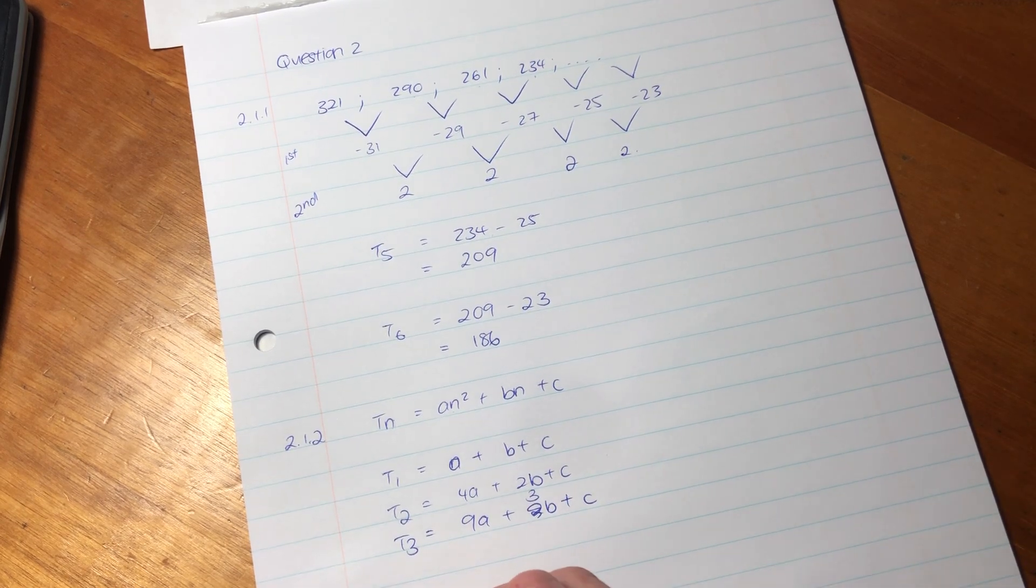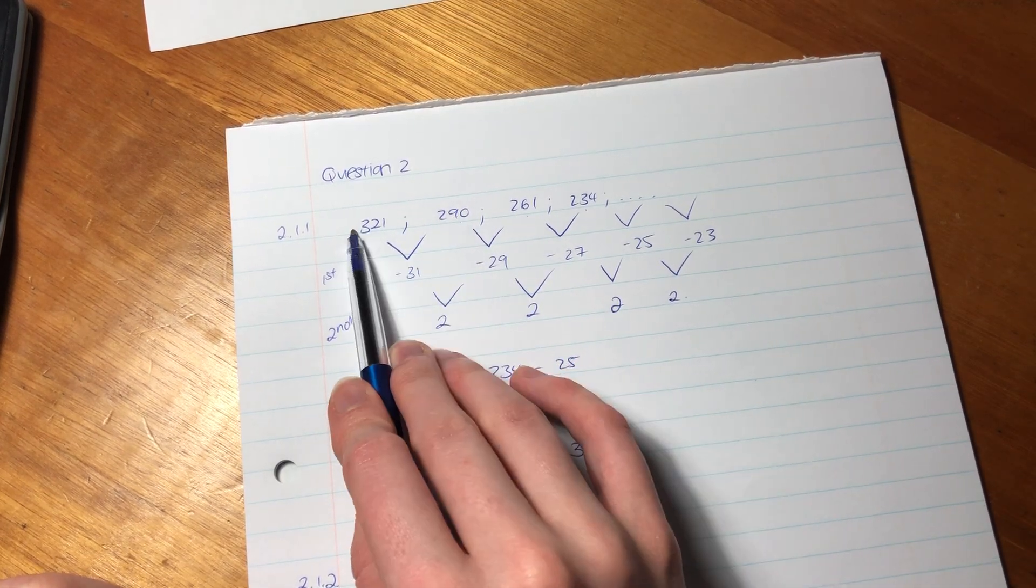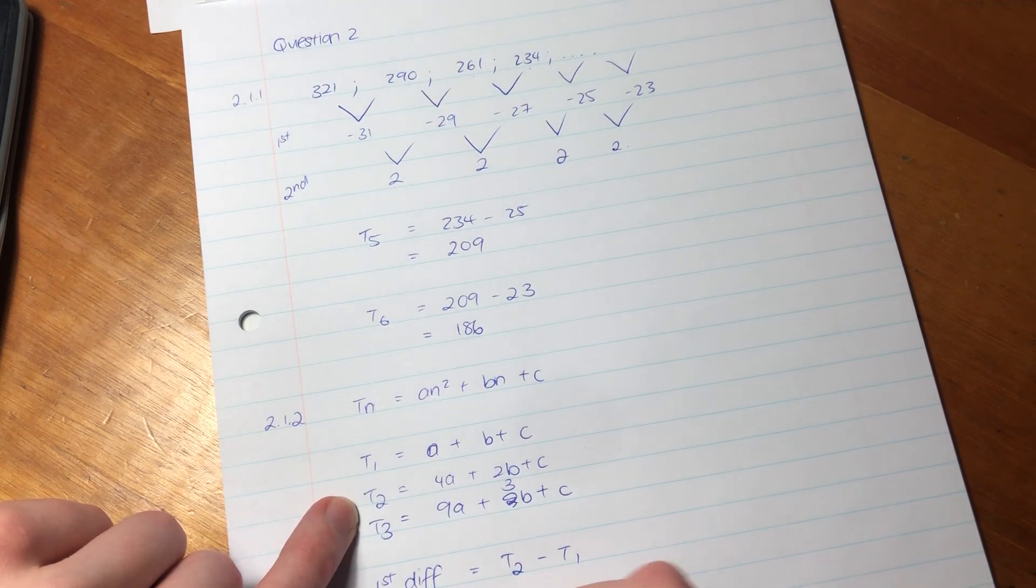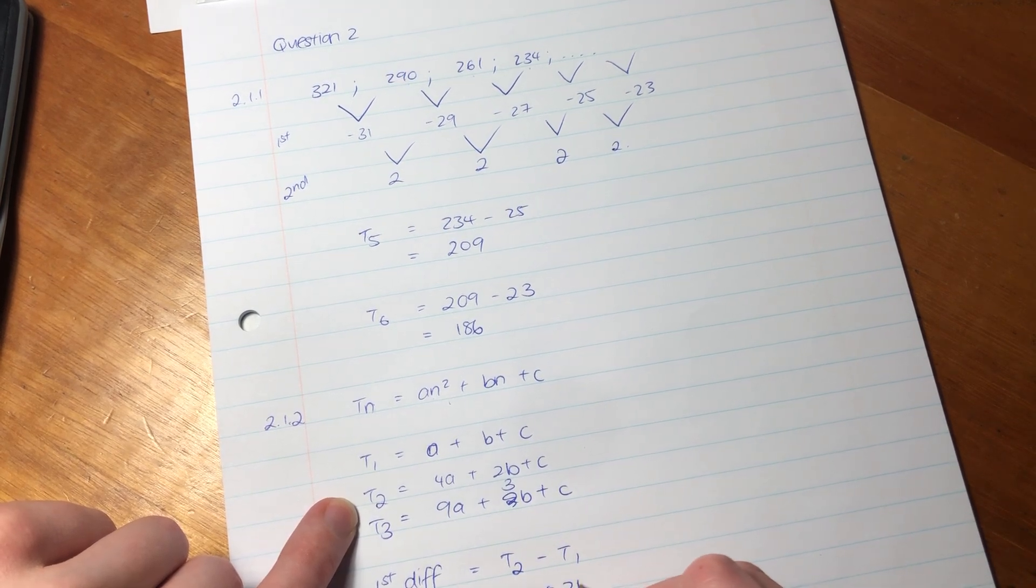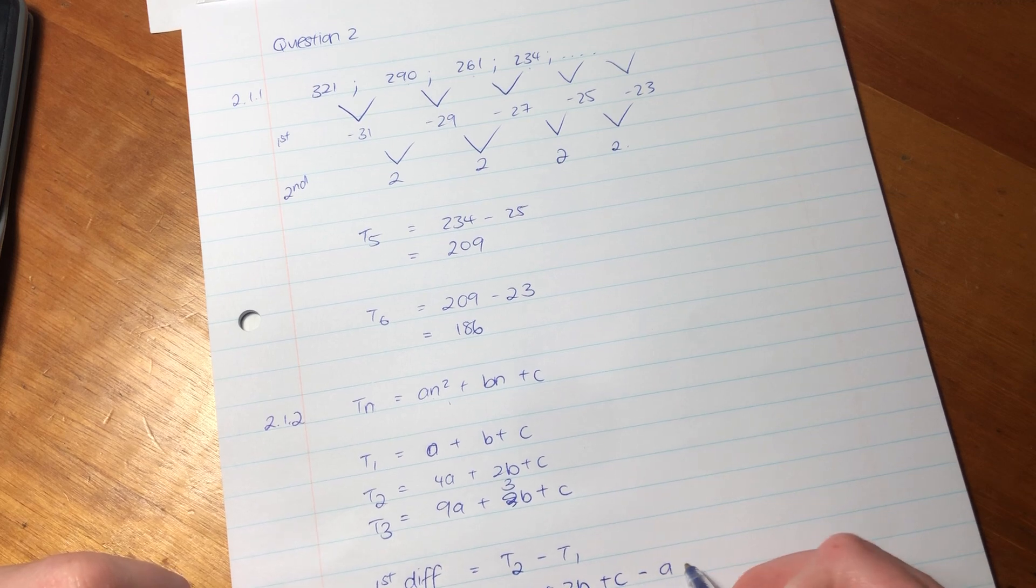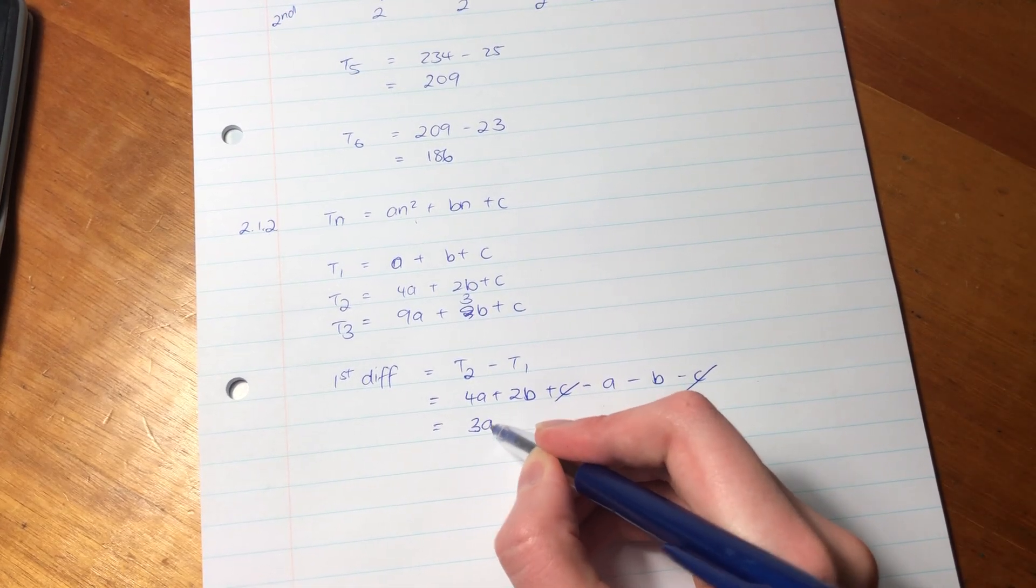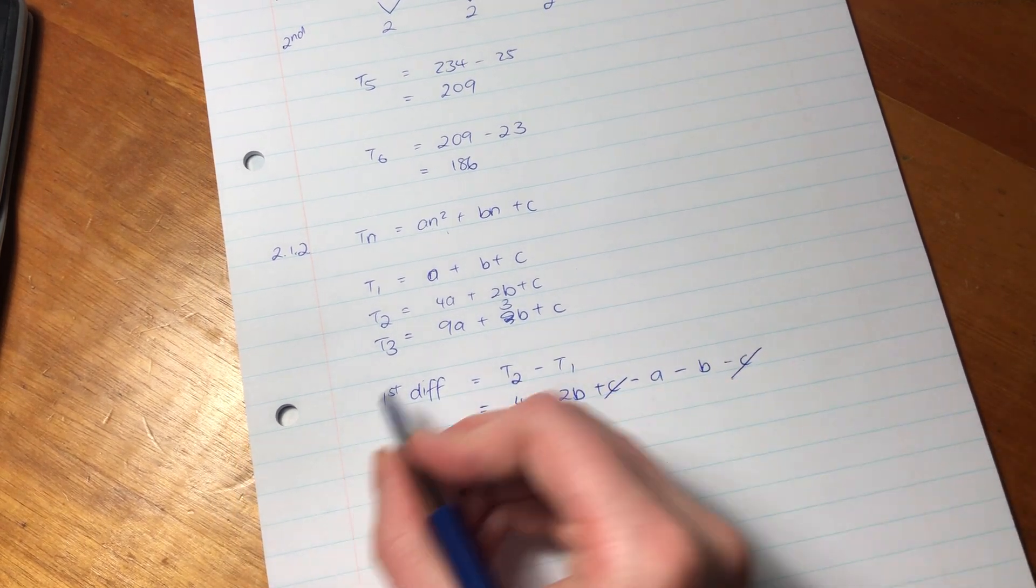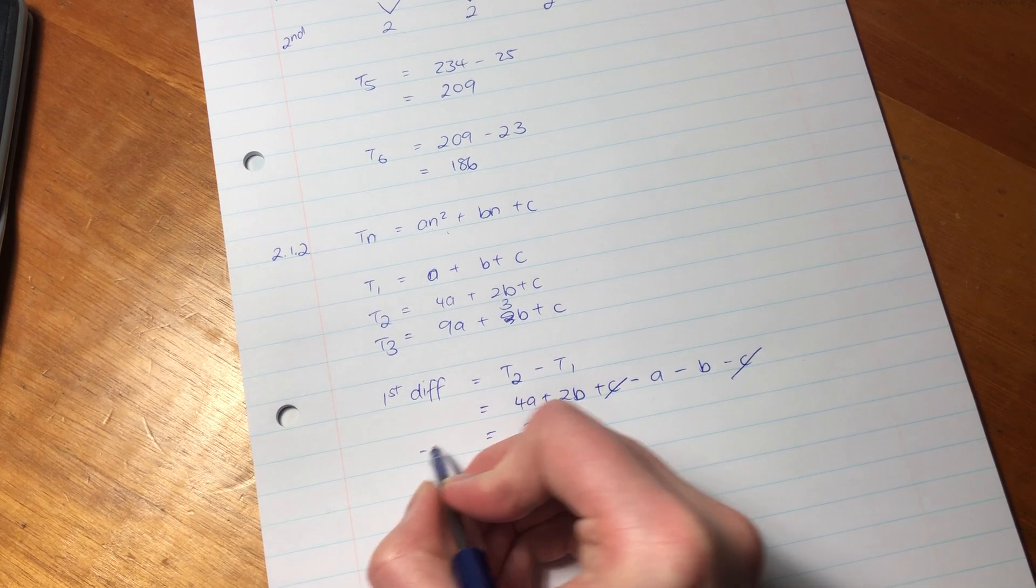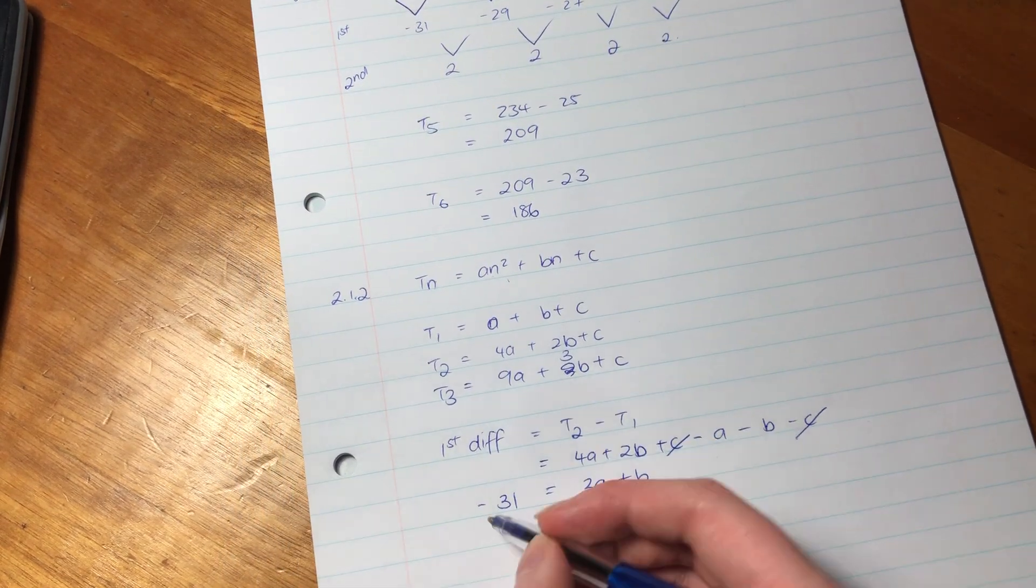So what we're going to do is we know that our first difference is going to equal T2 minus T1, which is what we did over here. We said T2 minus T1 equals negative 31. So we know that T2 equals 4A plus 2B plus C, then we're going to minus A minus B minus C. So then these C's cancel, and this gives us 3A plus B. So we know our first difference equals 3A plus B, and we know in this instance, our first difference equals negative 31. So we have one equation.